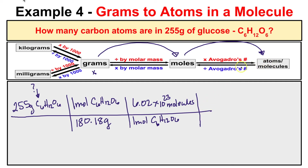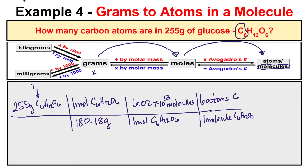That allows us to figure out the number of molecules, but we want to know how many carbon atoms there are. Looking at a molecule of glucose, we can see there are six carbon atoms in one molecule of glucose C₆H₁₂O₆. So we do one additional step: there are six atoms of carbon in one molecule of C₆H₁₂O₆. Grams of glucose cancel with grams on the bottom, moles of glucose cancel, and molecules of glucose cancel — leaving us with atoms of carbon.